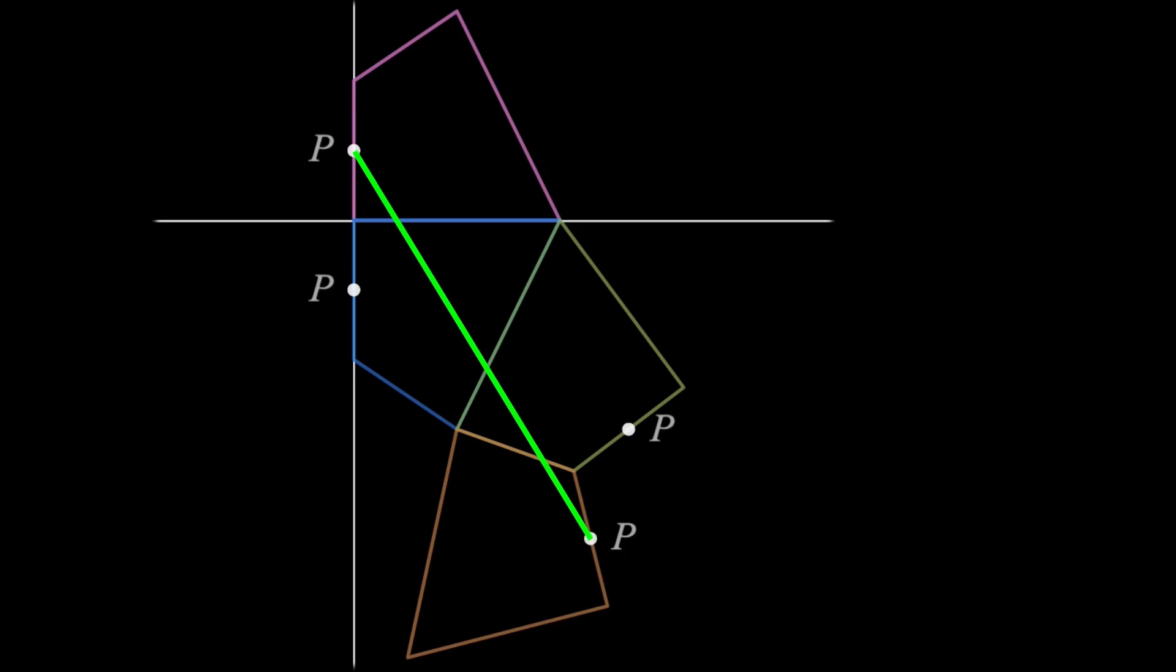The reason this works is because the four line segments here all within one of the polygons correspond to one of the four line segments that will continuously connect P to itself in the original.